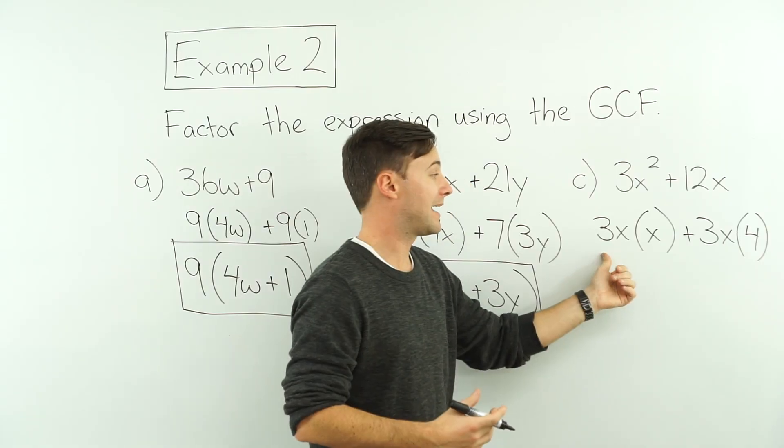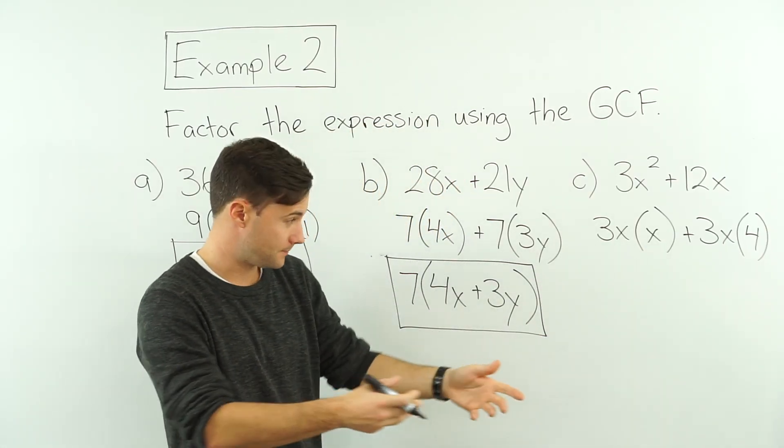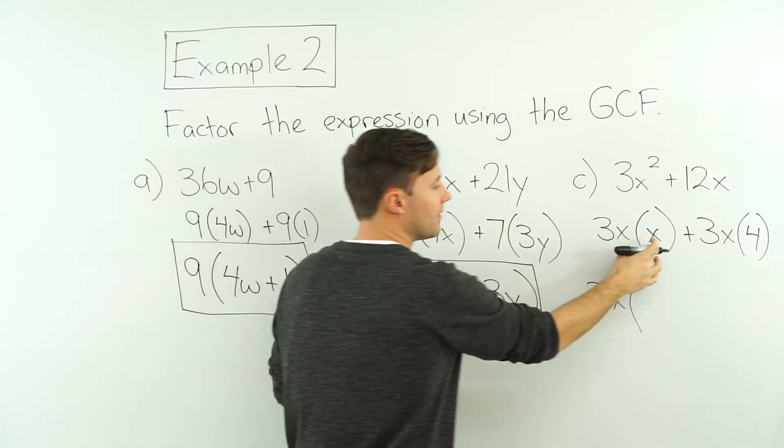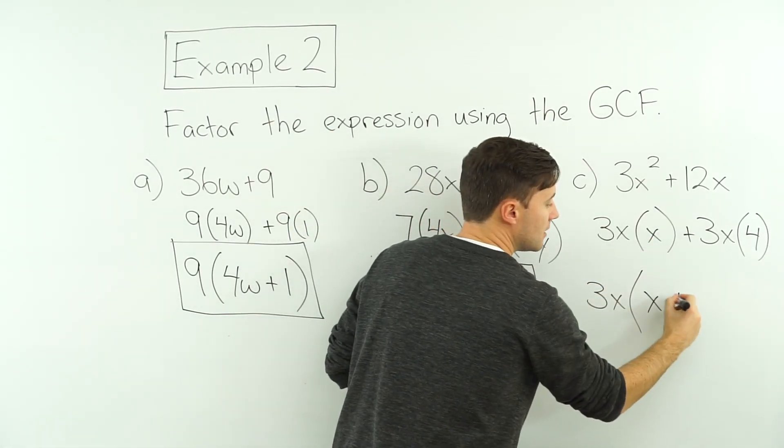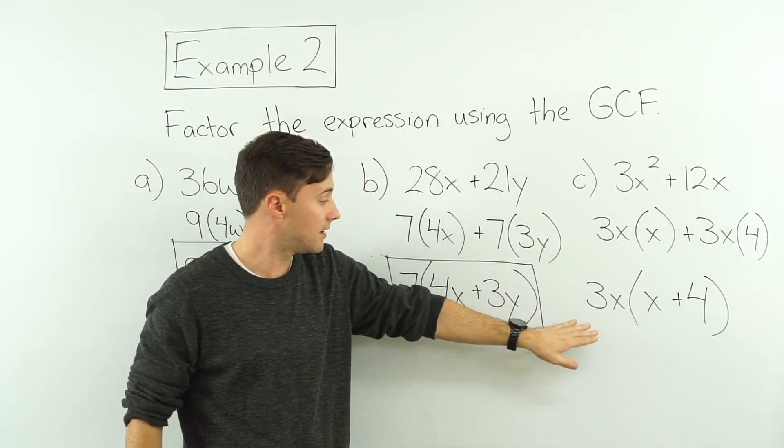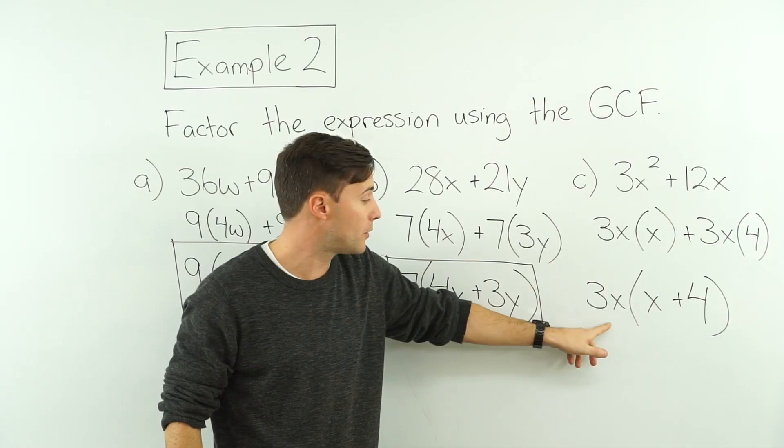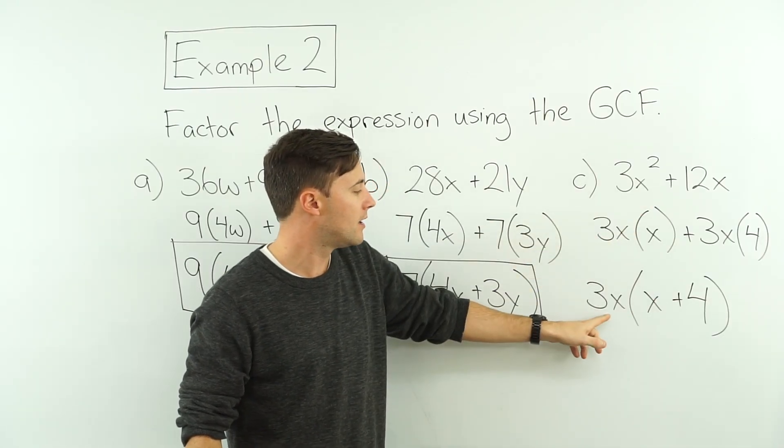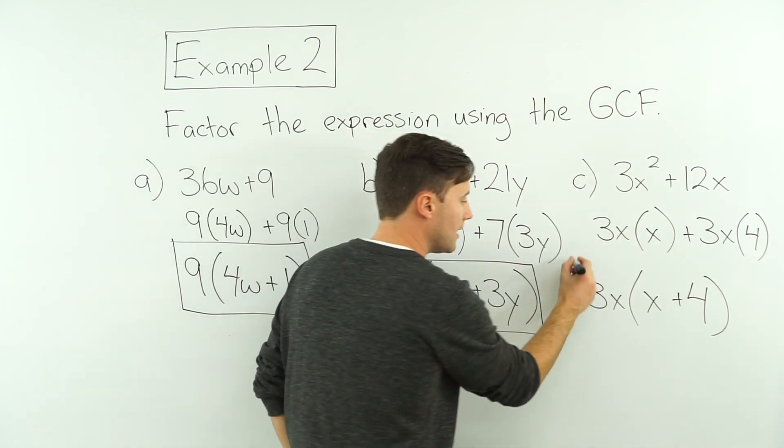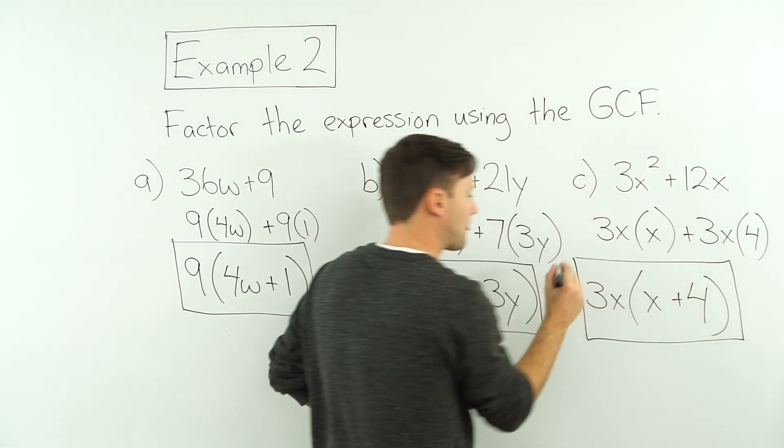I factor out the 3x from both terms. Bring it outside the parentheses. So I've got 3x. What's left over? The x plus 4. And before I box my answer, let me check using the distributive property. 3x times x is 3x². Plus, 3x times 4 is 12x. Now I can box it. And I'm done.